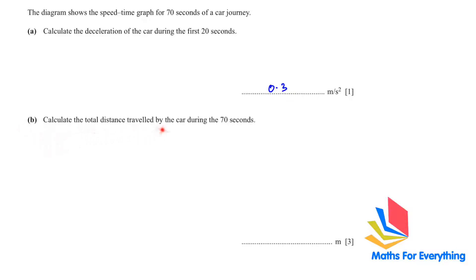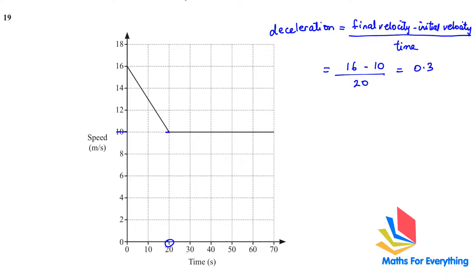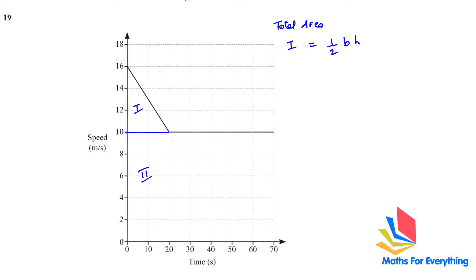Next, calculate the total distance travelled by the car during the 70 seconds. To find the distance we have to find the area under the curve. You can break up this shape in any form you find it easy. For now I am breaking this up into a rectangle and a triangle. So area 1 is the rectangle, area 2 is the triangle. The first area is a triangle, so half times base times height. Our base is 20 and the height is 16 minus 10 which is 6.